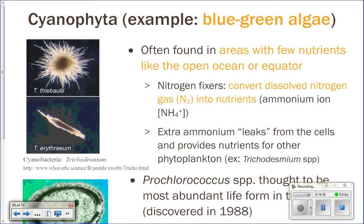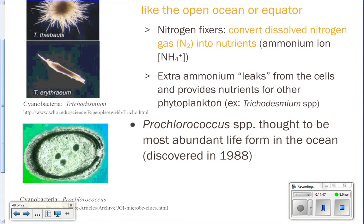Cyanophytes are typically found out in the open ocean away from places where there are lots of nutrients, so by the equator out in the open ocean. They are special because they are nitrogen fixers. Basically, all living things need nitrogen as an essential nutrient because nitrogen is part of amino acids, which form proteins. All proteins in your body have nitrogen in them. Most of the nitrogen on earth is found in the form of nitrogen gas, which is not usable to living things. Nitrogen fixers take that nitrogen gas, which is unusable, and convert it into ammonia, which is a usable form. Very few things on earth have this ability, and blue-green algae are one of them.